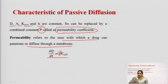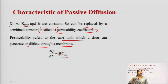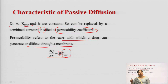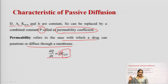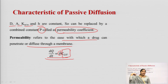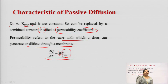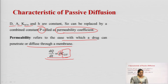The concentration of drug in blood is always negligible compared to the concentration in GIT, so Cgit minus C can be replaced with Cgit alone. This equation represents first order rate kinetics — therefore, in case of passive diffusion, the drug diffuses with first order rate kinetics.